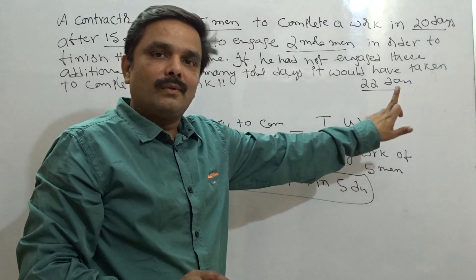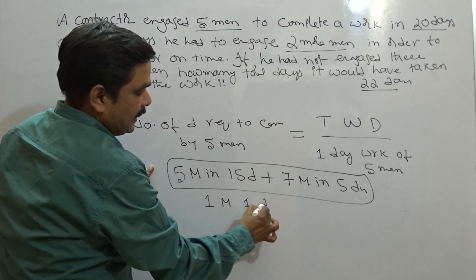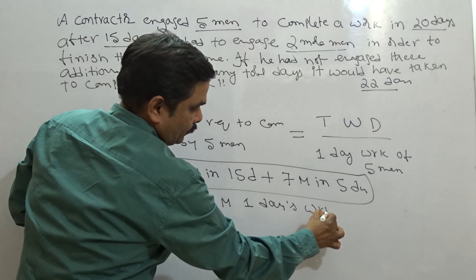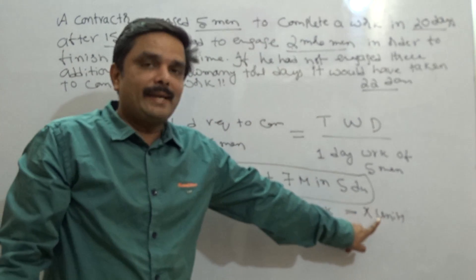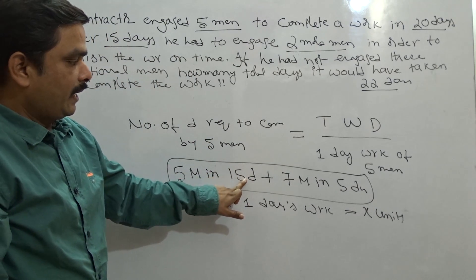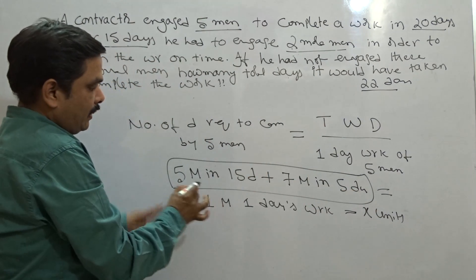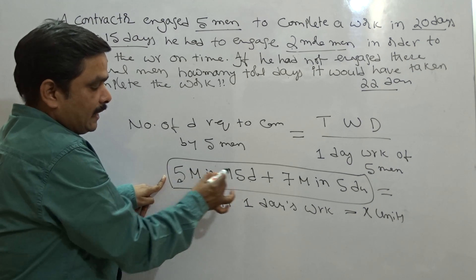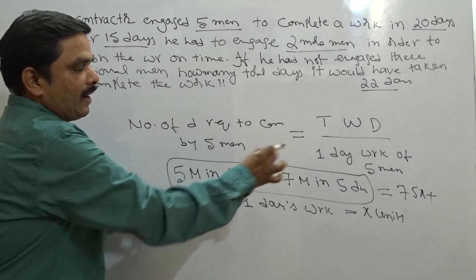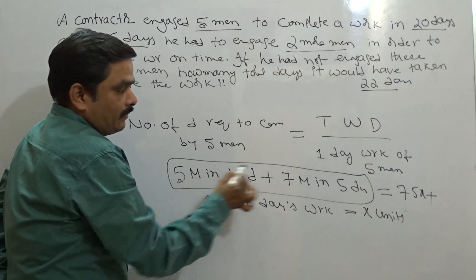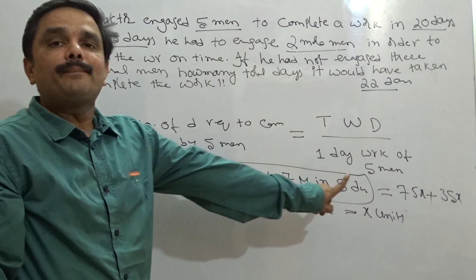Because division is involved, I need a common variable. I am going to take one man's one day work as x units. Then obviously: five men's fifteen day work is 15 × 5 = 75x. Plus seven men's five day work is 7 × 5 = 35x. Because one man's one day work is x units.